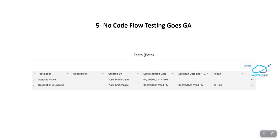The next feature is No-Code Flow Testing goes GA. Salesforce introduced no-code flow testing for record-triggered flows in the Summer 22 release as a beta feature. In the Winter 23 release, it becomes Generally Available (GA). You can now create your test data for flow testing.